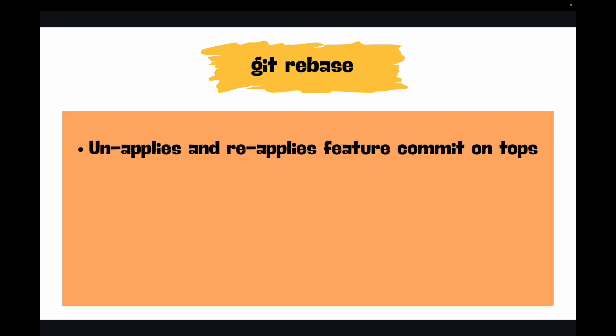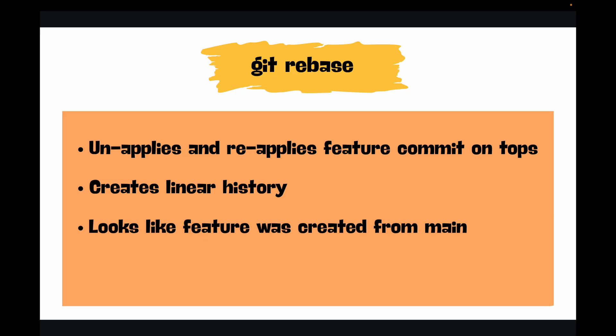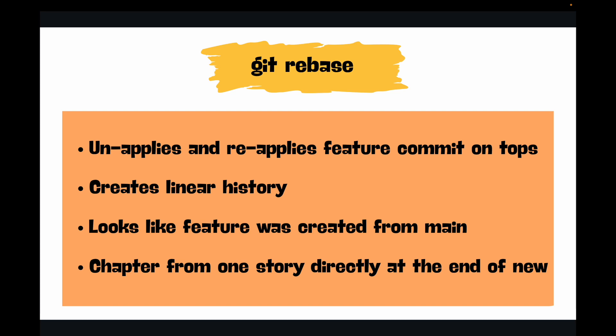Git rebase, on the other hand, takes all of your commits from your feature branch, unapplies them, moves your branch's base to the latest commit on main, and then reapplies your feature commits on top. This creates a perfectly linear history — your feature branch now looks like it was created and developed directly from the latest main commit. It's like taking chapters from one story and pasting them directly onto the end of a new single story. The key takeaway is that rebase rewrites commit history, creating new commit hashes to produce a clean, linear, easy-to-read history.